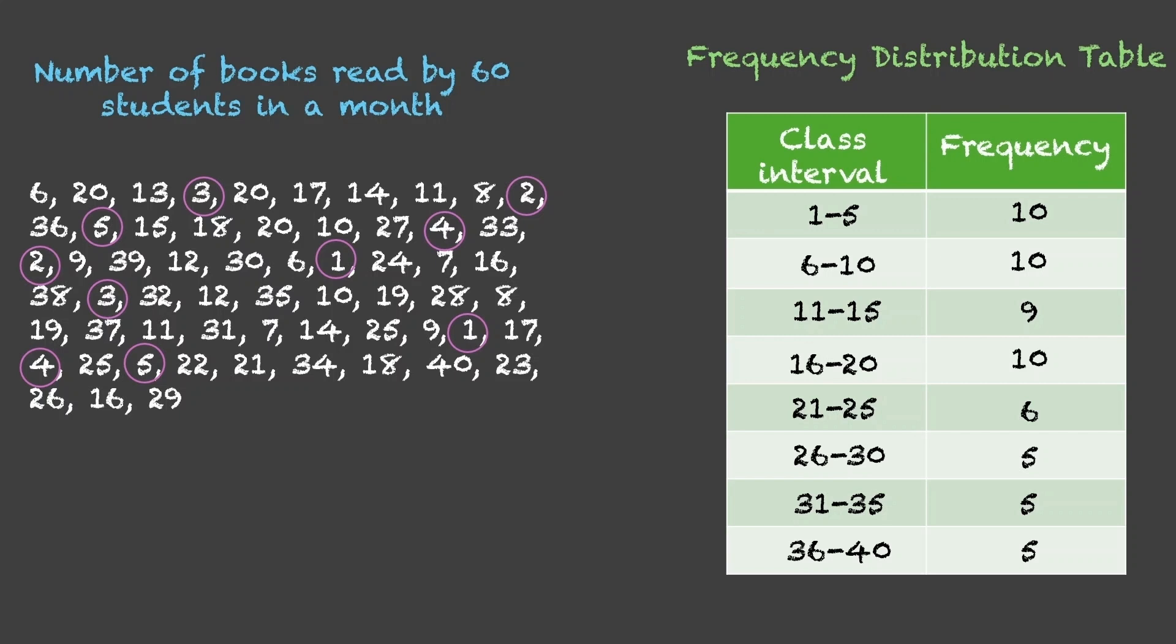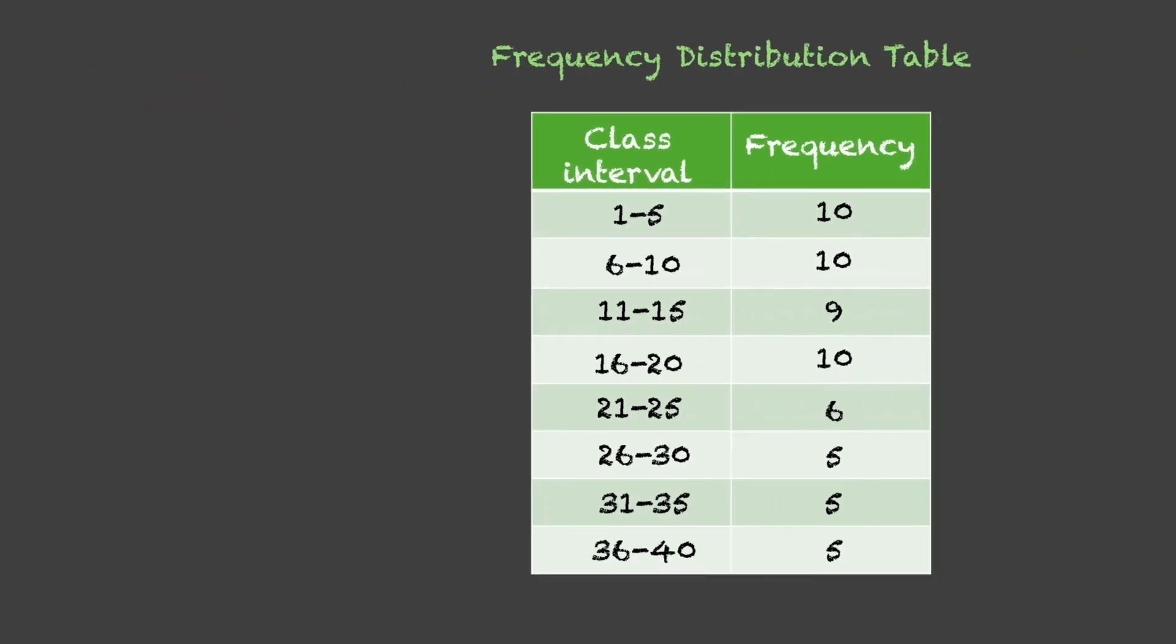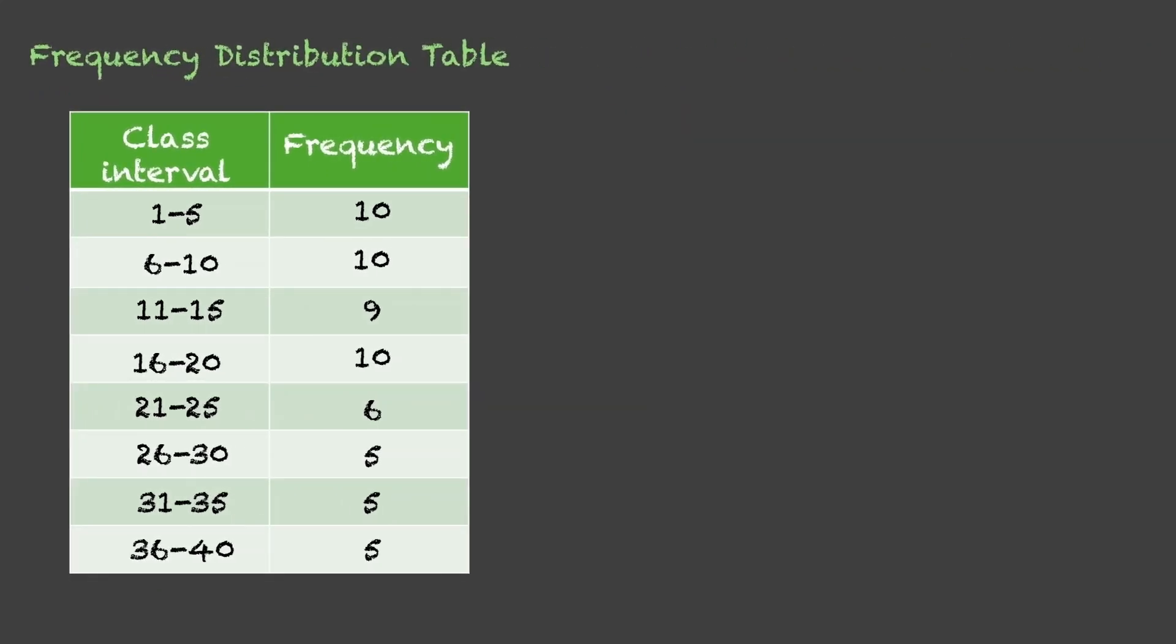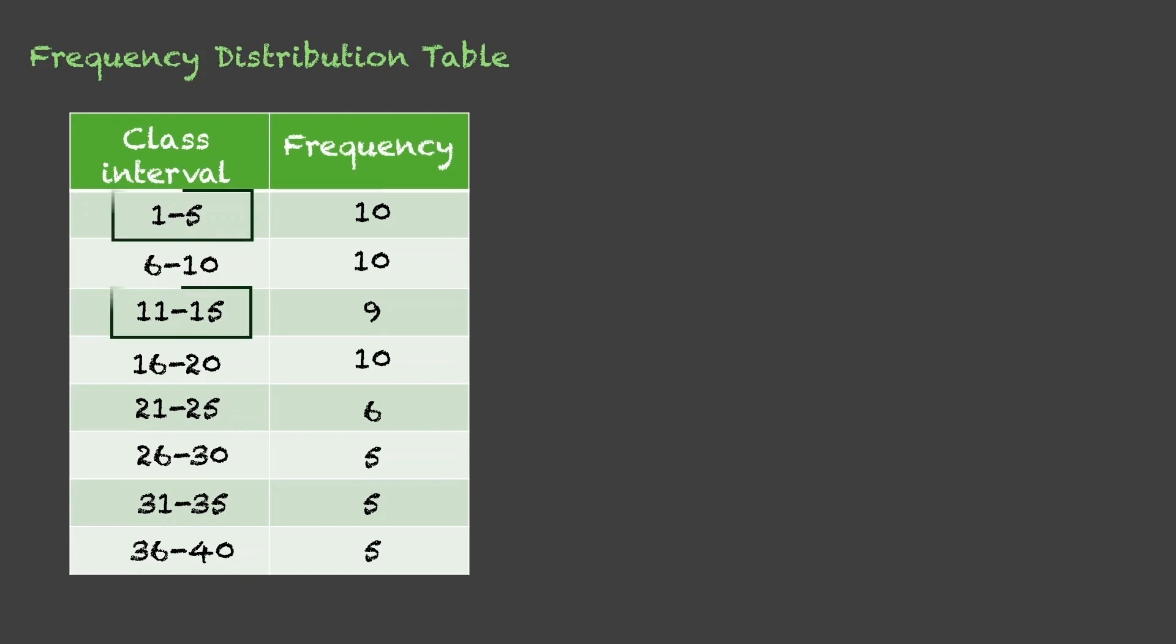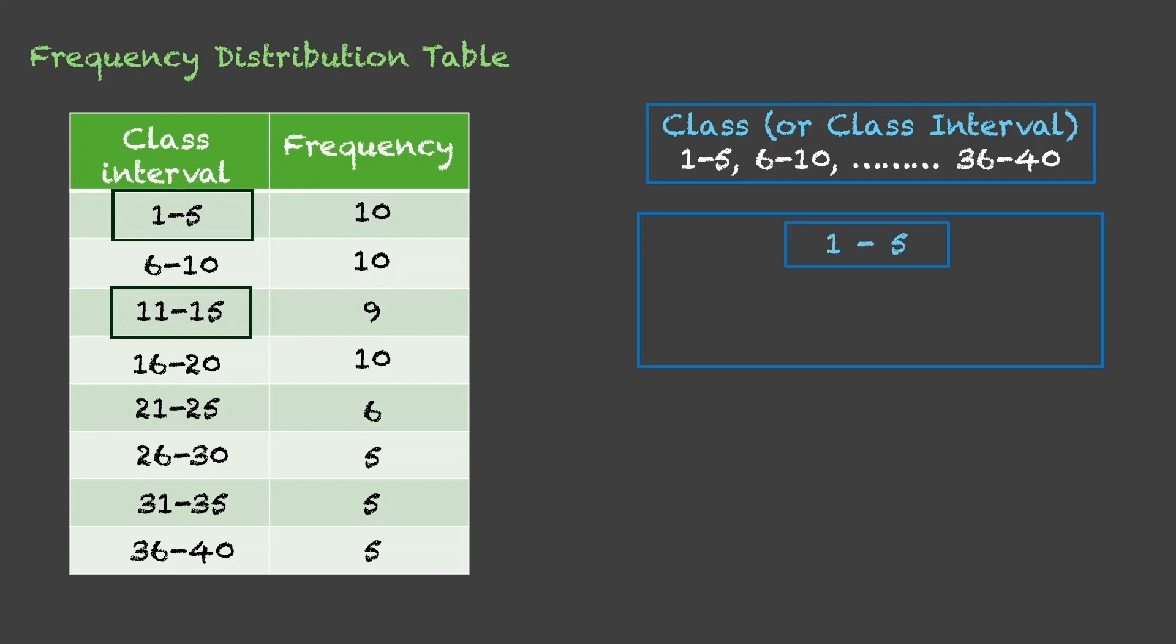Now, before we start learning how to create such a table, what are the things that we should look for before we start creating this table, let us look at some basic terms. Each group is called class or class interval. Here, the class intervals are 1 to 5, 6 to 10, 11 to 15, and so on.